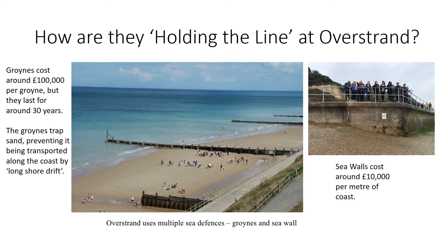To hold the line at Overstrand, several coastal defenses are used. There are groynes, which cost around a hundred thousand pounds per groyne. They are made of hardwoods and last about 30 years. Sand that would otherwise be transported along the coast by longshore drift is trapped against the groyne, keeping the sand in place so it acts as a natural coastal defense, as well as being attractive for tourists.